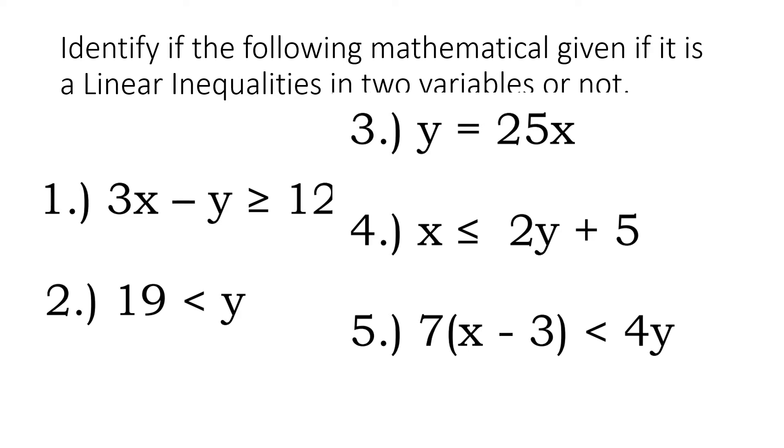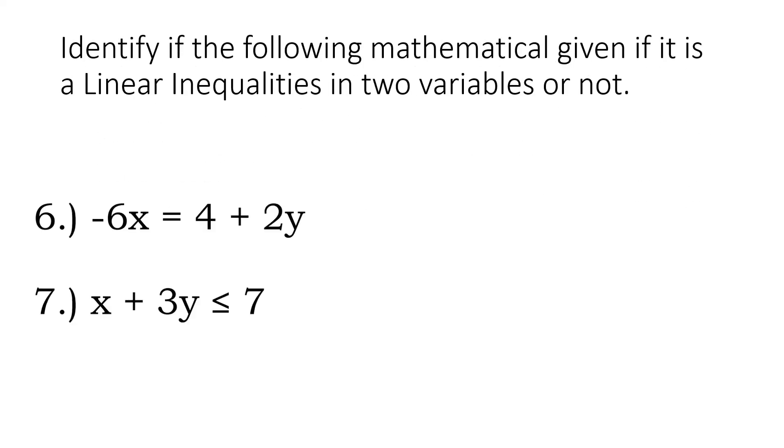Let's proceed. Number 6 is not an example since there's an equal sign. Number 7 is an example of a linear inequalities in two variables. Number 8 is not an example because there's only one variable here. Number 9 is still not an example because there's only one variable and that is x, even if it's less than. Number 10 is an example. I hope you get that one.